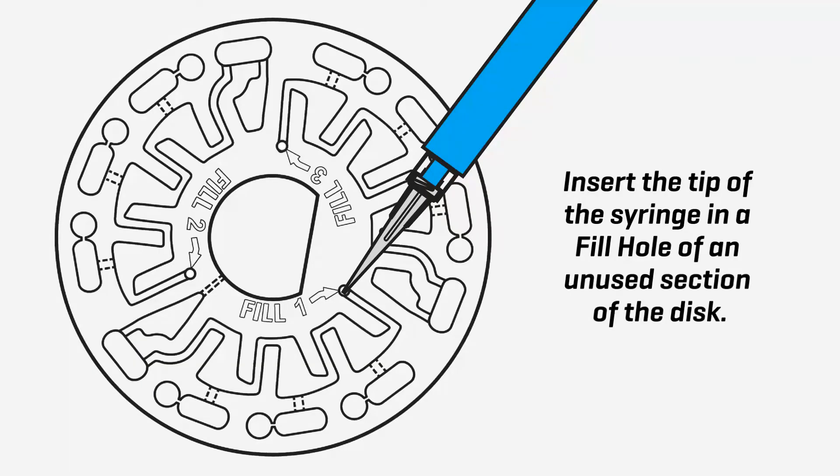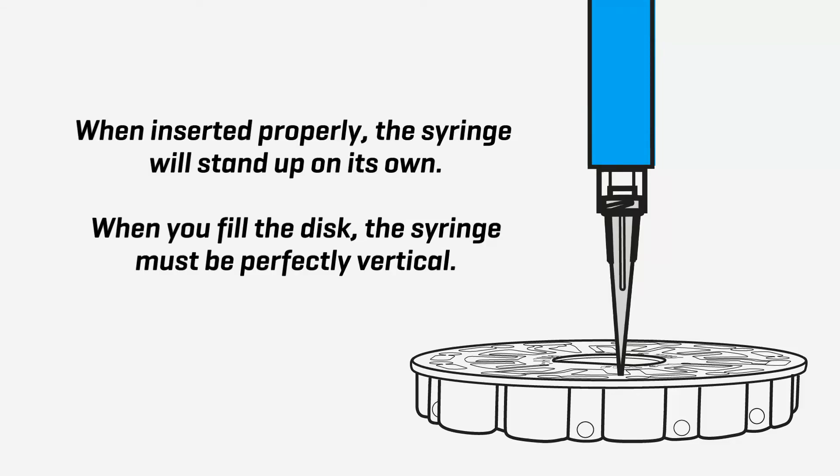Insert the tip of the syringe in a fill hole of an unused section of the disc. When inserted properly, the syringe will stand up on its own. When you fill the disc, the syringe must be perfectly vertical.